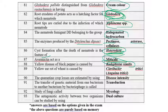Yellow ear rot of wheat is caused by Clavibacter tritici or Anguina tritici. Quarantine crop losses are estimated by using disease intensity. Transfer of genetic material from one bacterium to another by bacteriophage is known as transduction.